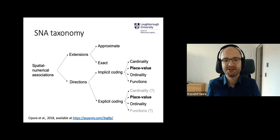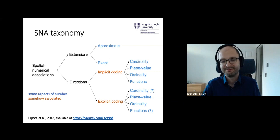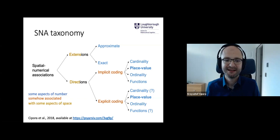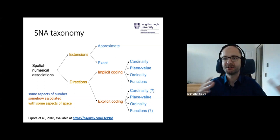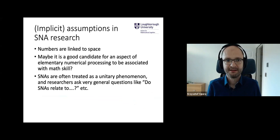Some time ago, we proposed this taxonomy of space-number associations, showing we have some aspects of numbers — either approximate or exact — cardinality, place value, ordinality, and functions. So different aspects of numerical information, different types of association, which can be either implicit or explicit. And also some aspects of space: it can be extension like small or large area covered, versus directions like left, right, up, down, or anything like that.